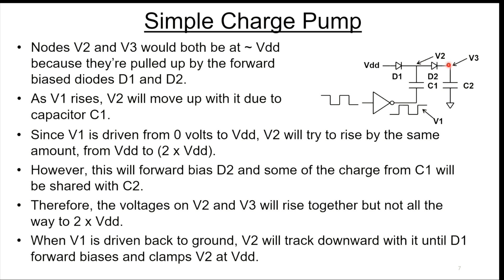Nodes V2 and V3 would both be at approximately VDD because they're pulled up by the forward biased diodes. We're assuming no drop in the diodes. As V1 rises, V2 will move up with it due to capacitor C1. Since V1 is driven from 0 volts to VDD, V2 will try to rise by the same amount, from VDD to 2x VDD.